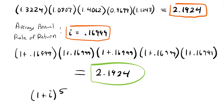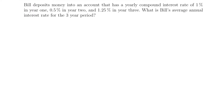Now let's apply this to another example. Bill deposits money into an account with yearly compound interest rates of 1% in year one, 0.5% in year two, and 1.25% in year three. What is Bill's average annual interest rate for that three-year period?